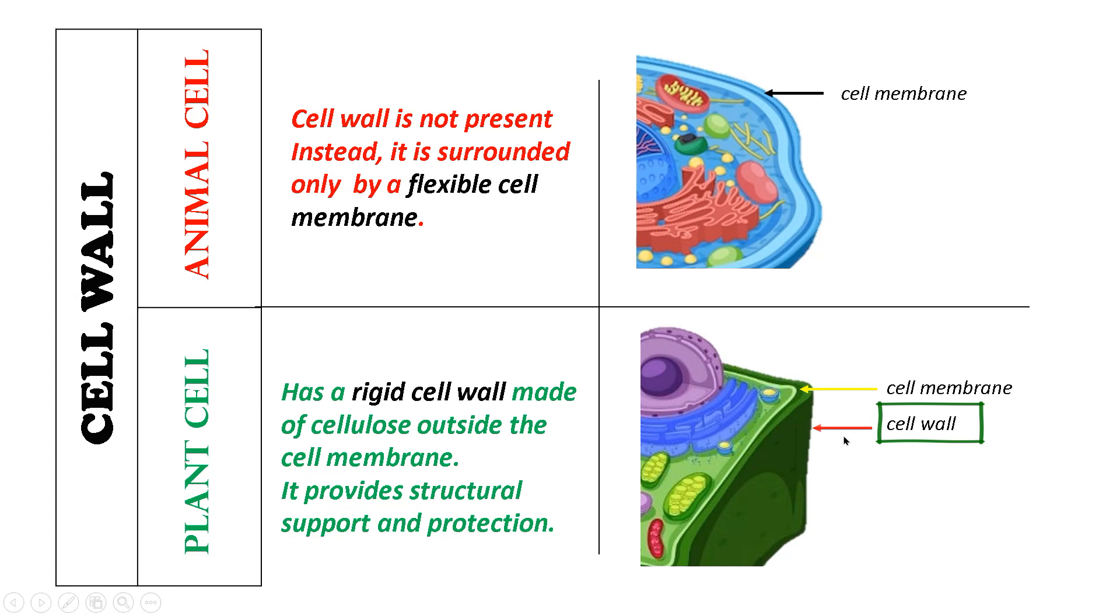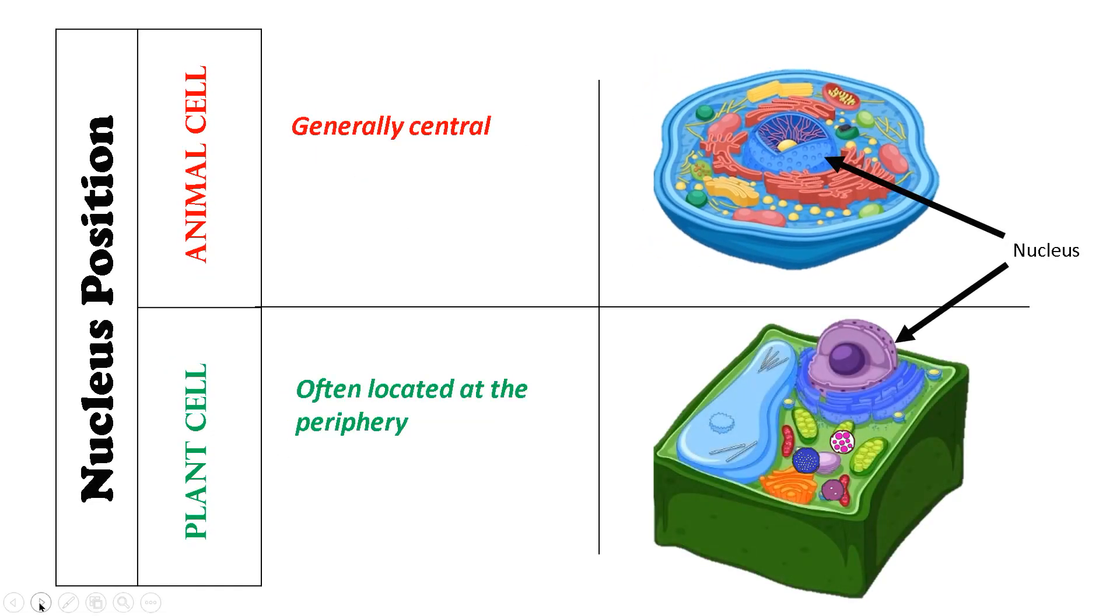The next difference is the position of the nucleus. In case of animal cells, the nucleus is generally positioned somewhere near the center, but in case of plant cells, the nucleus is often located at the periphery of the cell.